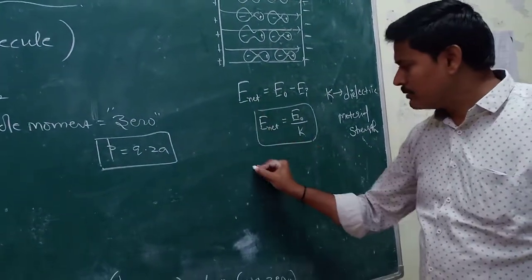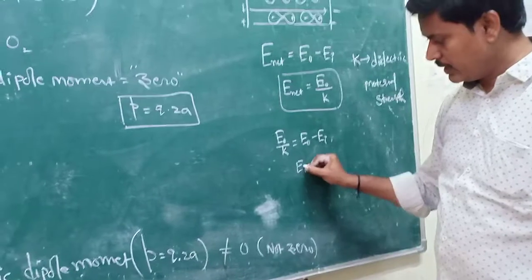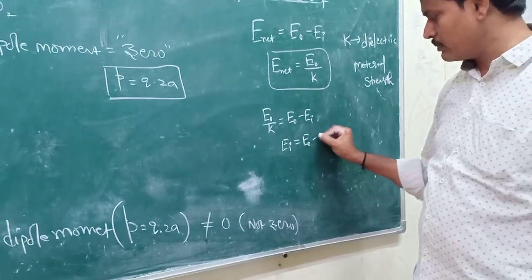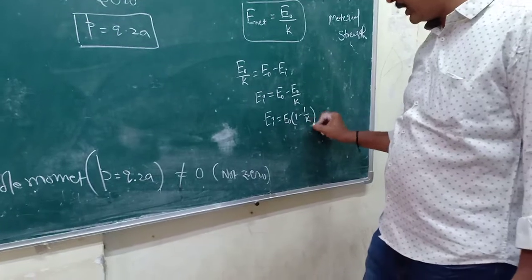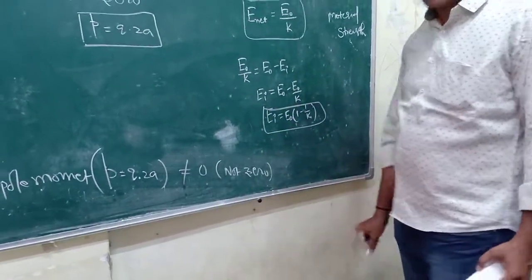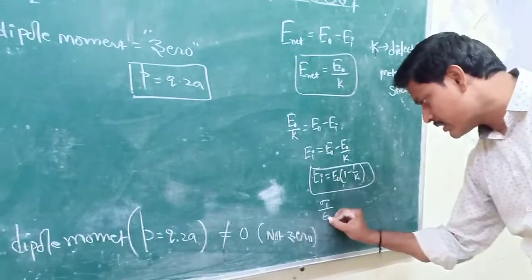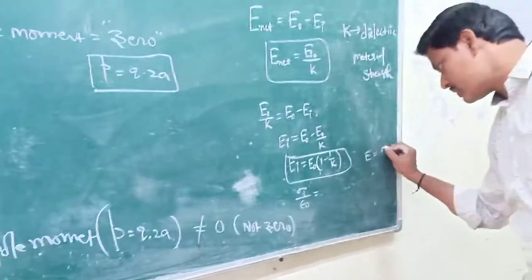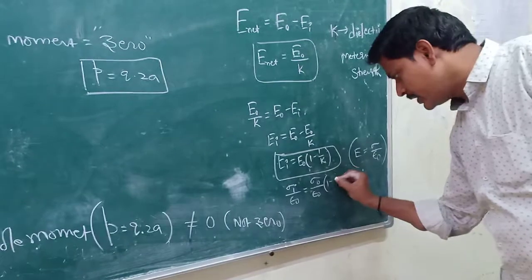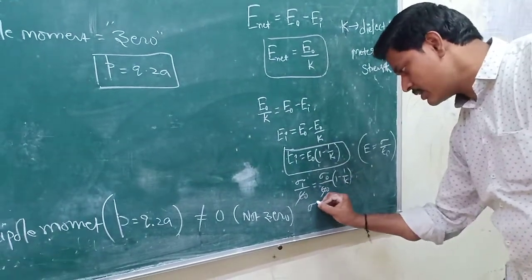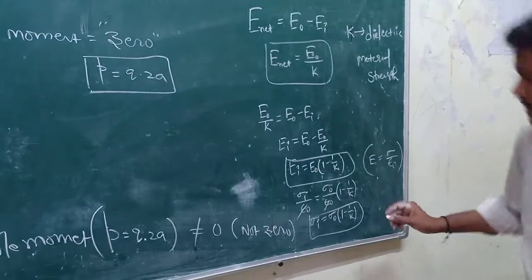Substituting these values: E₀/K = E₀ − Eᵢ. Therefore, the induced electric field Eᵢ = E₀ − E₀/K = E₀(1 − 1/K). The induced charge density σᵢ/ε₀ = σ₀/ε₀ × (1 − 1/K). Cancelling ε₀, we get: σᵢ = σ₀(1 − 1/K). This is the induced charge density.